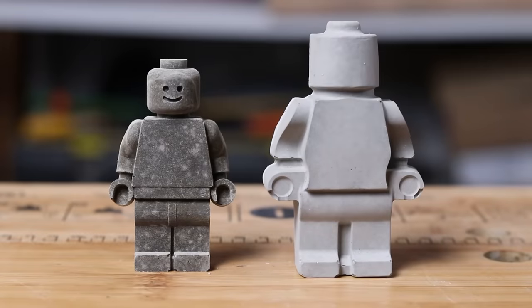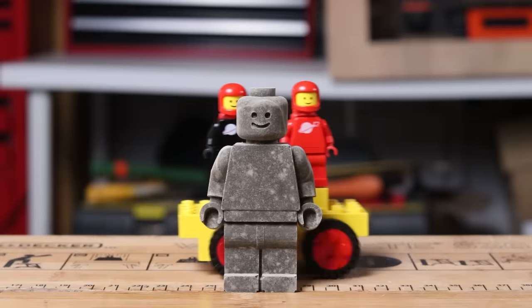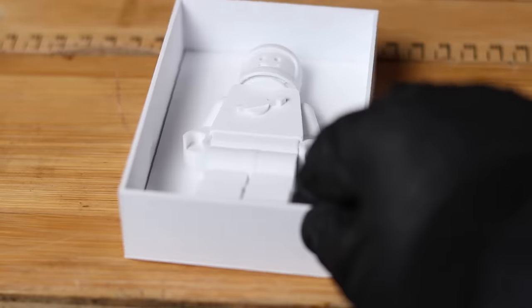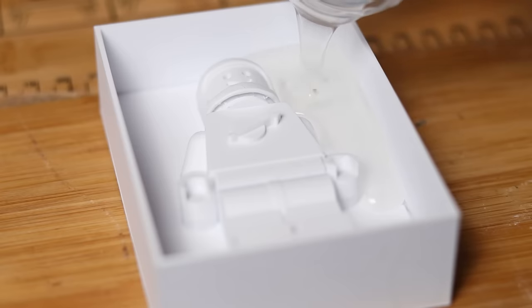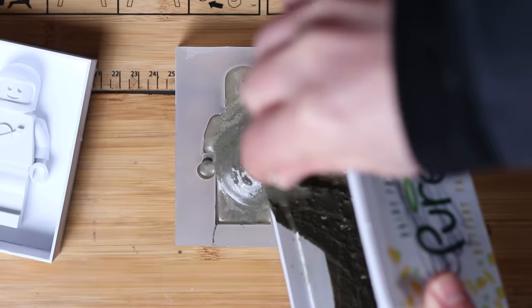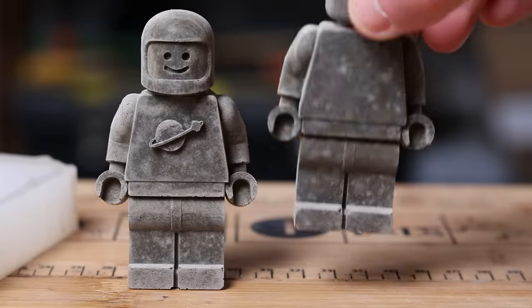And then it struck me. If I could do that, then I could make molds of other LEGO-inspired figs too. So of course I chose classic space to attempt first. I followed the same process of printing, making the mold and casting. And it turned out pretty good.